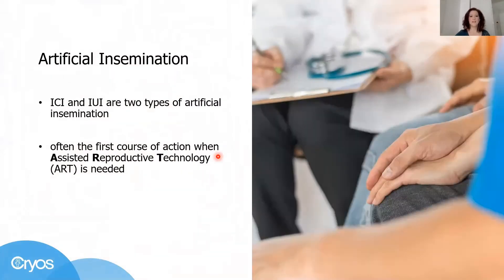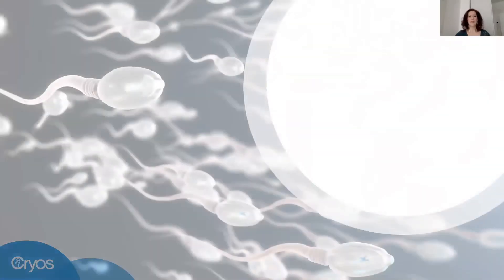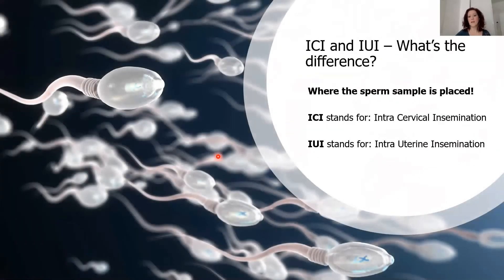Artificial insemination often is the first course of action when assisted reproductive technology, or ART, is needed, and it is a method that does not require highly sophisticated technology. ICI and IUI are both treatment types for artificial insemination — the same category — but what is actually the difference between them?